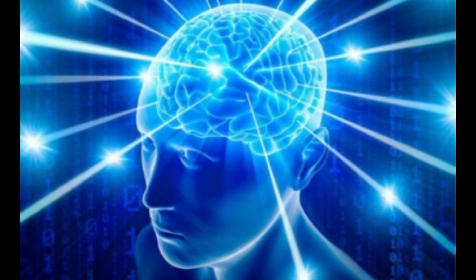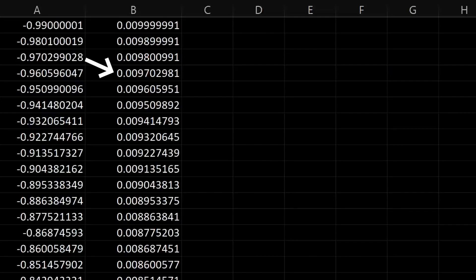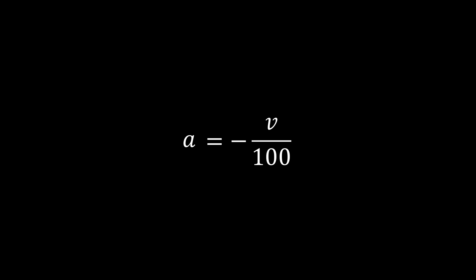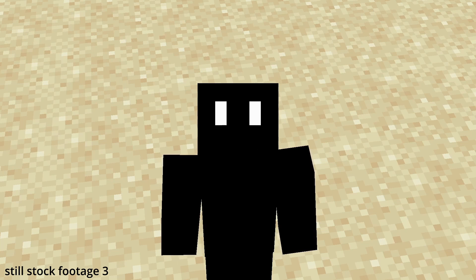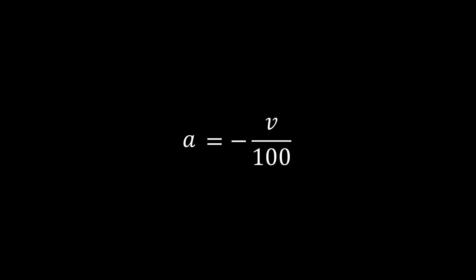Thanks to my supreme intellect, I have noticed the relation between the velocity and the acceleration. As you can see, the change in velocity over one tick is exactly one hundredth of the previous tick's velocity. And thus we have this equation. The V is negative because the acceleration is going in the opposite direction of the velocity. I hope everyone is caught up because we've been going pretty slowly so far. Ready? Let's go.